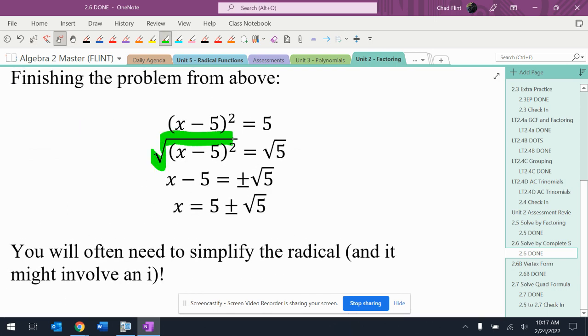To get rid of the squared, I take a square root. That's going to get rid of that squared, so I take a square root of each side, and when I do that